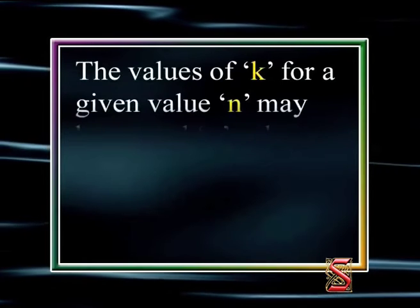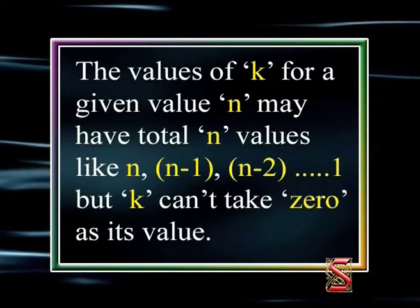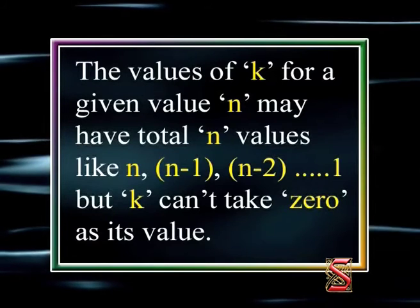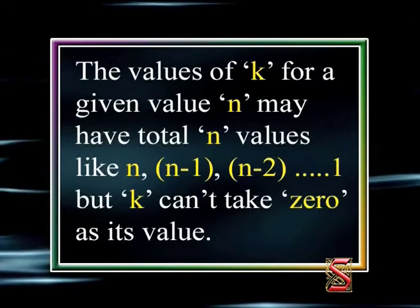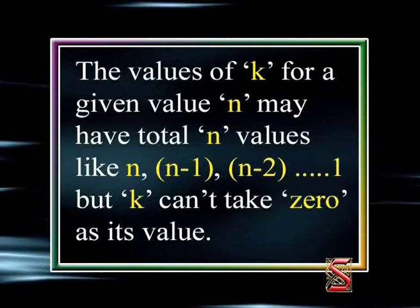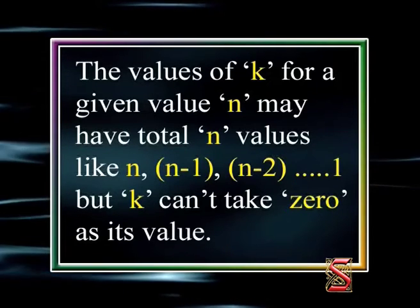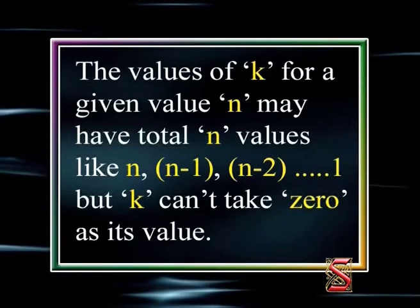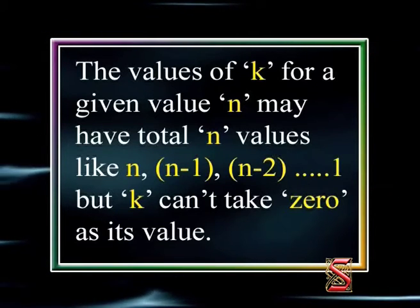Both N and K are integers. The values of K for a given value of N may have a total of N values: N, N−1, N−2, and so on down to 1.